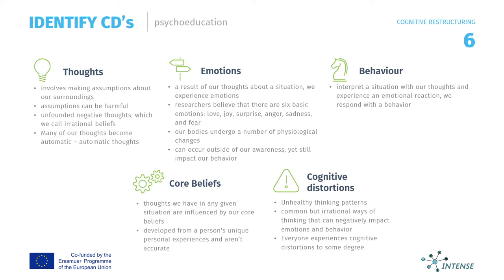Imagine your core beliefs are like a filter that each thought must pass through. If someone has the core belief that they are unlovable, each of their thoughts will have to make sense in the context of that belief. Unhealthy thinking patterns called cognitive distortions can lead to the reinforcement of negative thoughts and emotions. Cognitive distortions are common but irrational ways of thinking that can negatively impact emotions and behavior. Everyone experiences cognitive distortions to some degree, so don't be surprised if you can identify with them, or at least with a few of them.